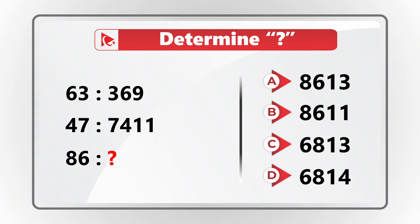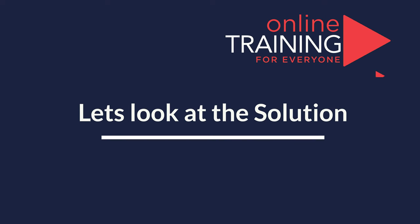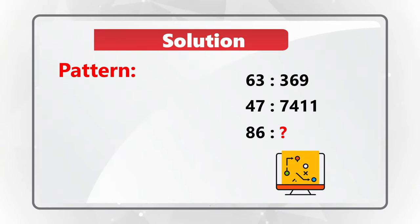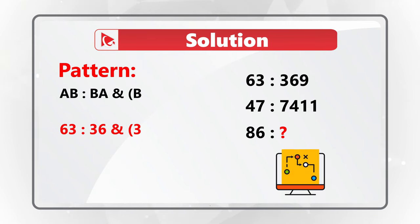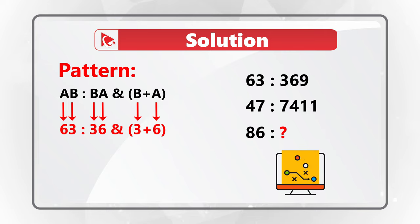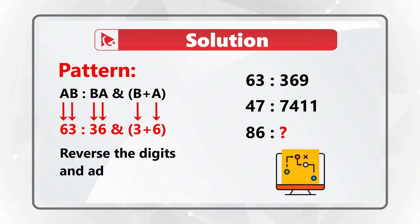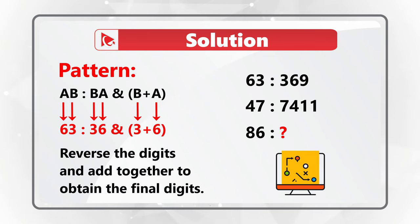Do you see the answer? Give yourself a little bit of time. I can't wait and I'm moving forward to reveal the final solution. My advice to you — to solve this and other similar types of challenges, you need to look for patterns. The pattern here is that AB is related to BA plus B plus A.